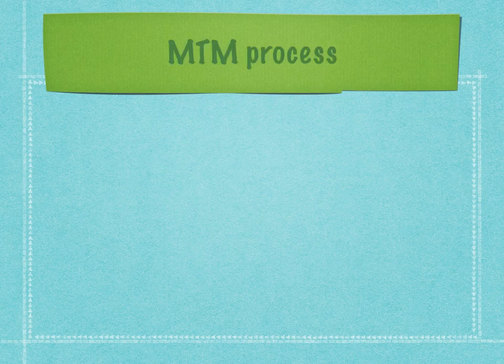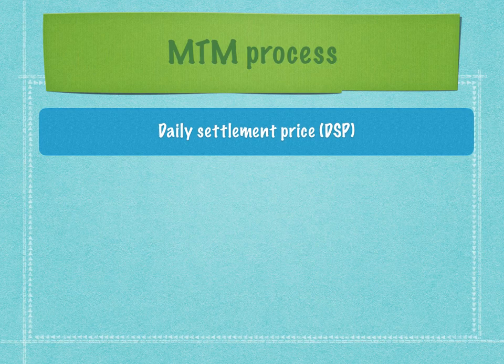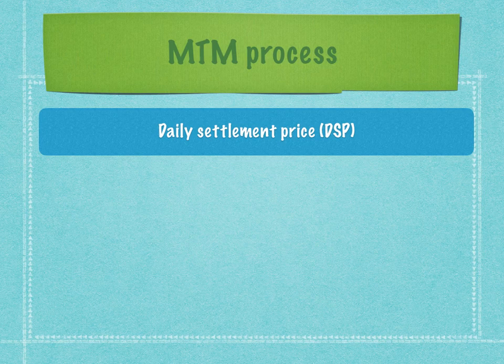The mark to market process is a comprehensive process defined by the regulator. Exchanges announce something called the daily settlement price of all the securities that are traded. Daily settlement price is not the closing price — many people assume this, but it is incorrect. Daily settlement price is calculated by the exchanges as a weighted average of the trades of the last 15 minutes of trading.